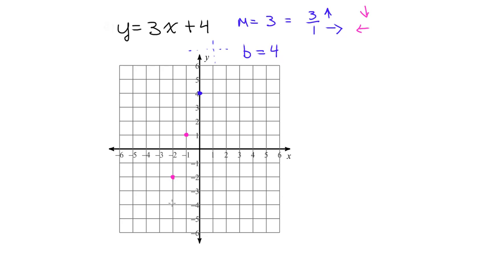So I go down 3 and left 1 repeatedly to place points. To verify: if I start at one of these points and move up 3, right 1 — what the slope says — I end up back on the next point. Connect with a straight edge and draw the line. The only time you move left is if you run out of room and have to work backwards.